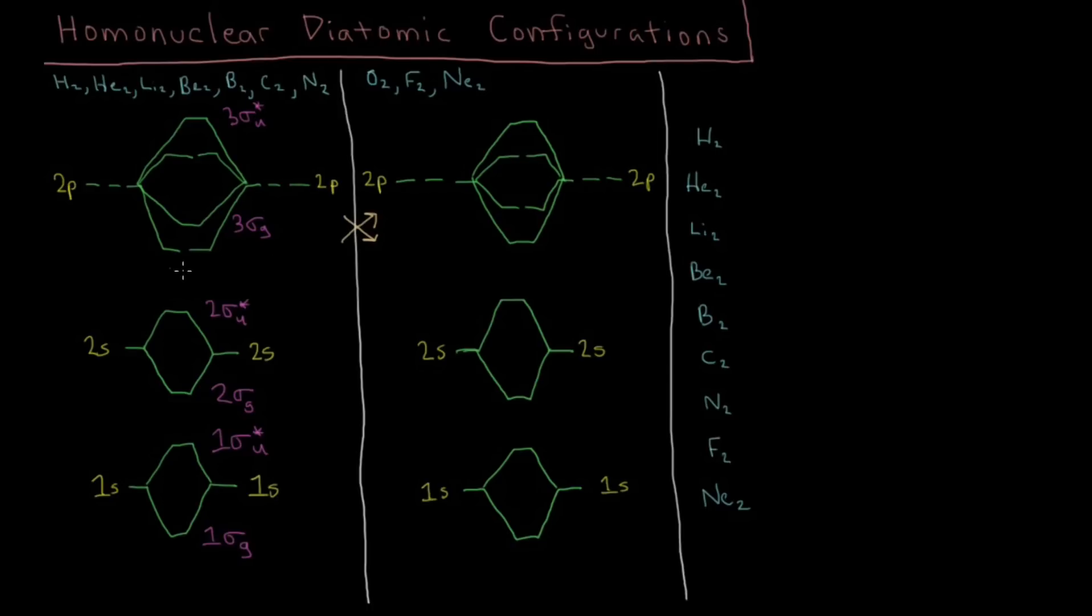But the 2px and the 2py orbitals, those each overlap to form these two degenerate pi molecular orbitals over here. So we can call this the 1πu. And pi bonding orbitals are of ungerade symmetry. They're of u. And then we have the same antibonding orbitals. There are two degenerate antibonding orbitals of pi type, and they are πg. So this is 1π*g.